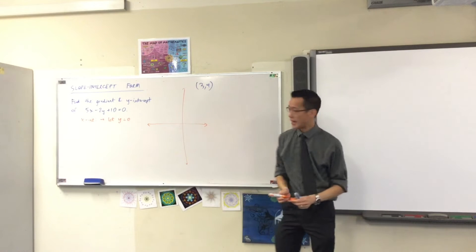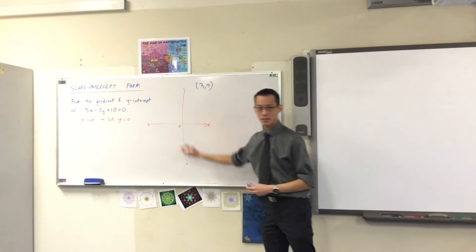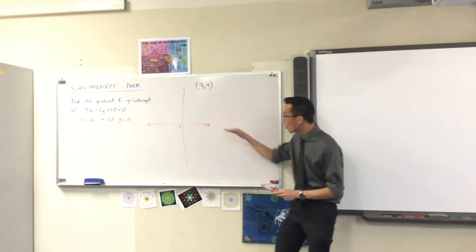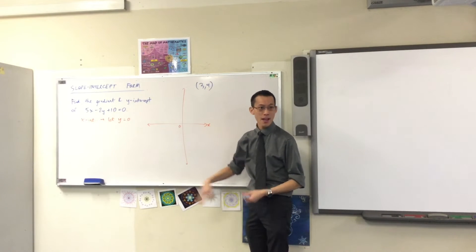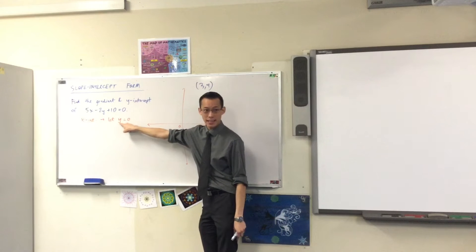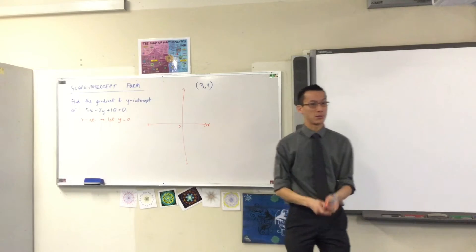I'm about to find the x-intercept. This is the x-axis. Everywhere along the x-axis, you haven't gone up, you haven't gone down, that means vertically you're at zero. Every single spot on the x-axis has y equals zero.